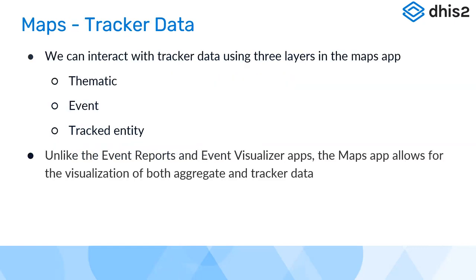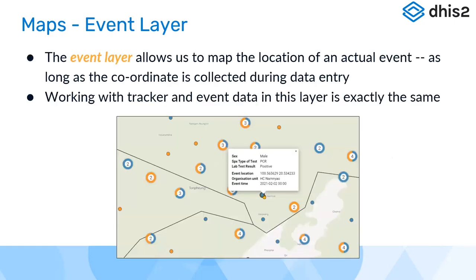In the Maps app — most of us have used DHIS2 at some point for analysis — when we interact with tracker data we're dealing with three different layers: thematic, events, and the tracked entity layer. Unlike the event reports and event visualizer applications, the Maps app allows visualization of both aggregate and tracker data within a single application.